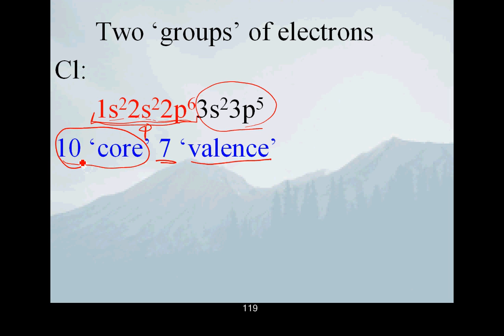If any electrons are to be played with, to be shared or given up, they're the valence electrons. So chlorine has 10 core electrons and 7 valence electrons.